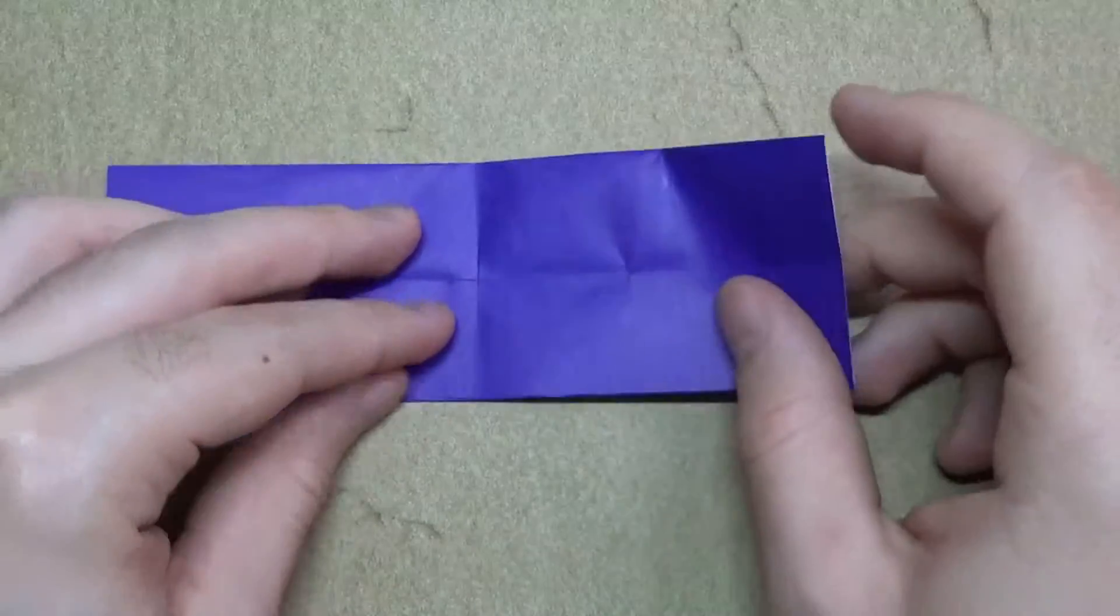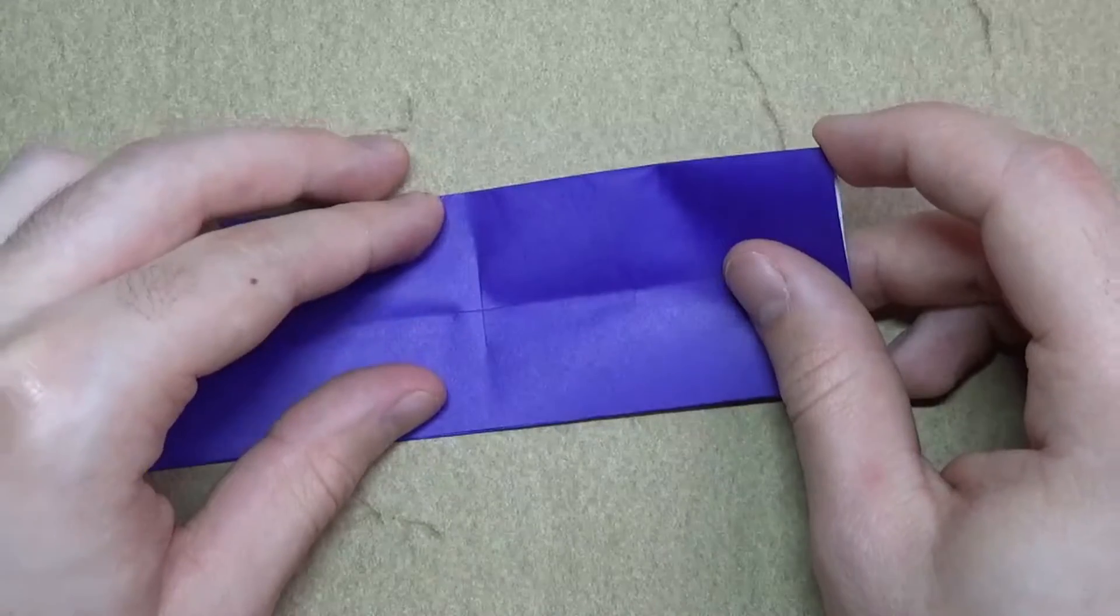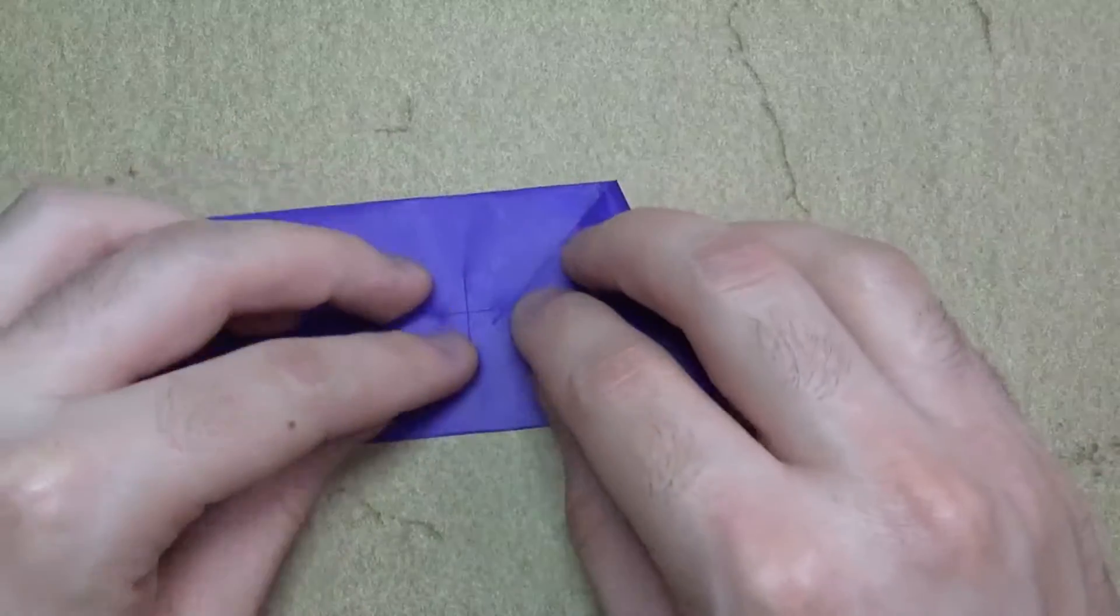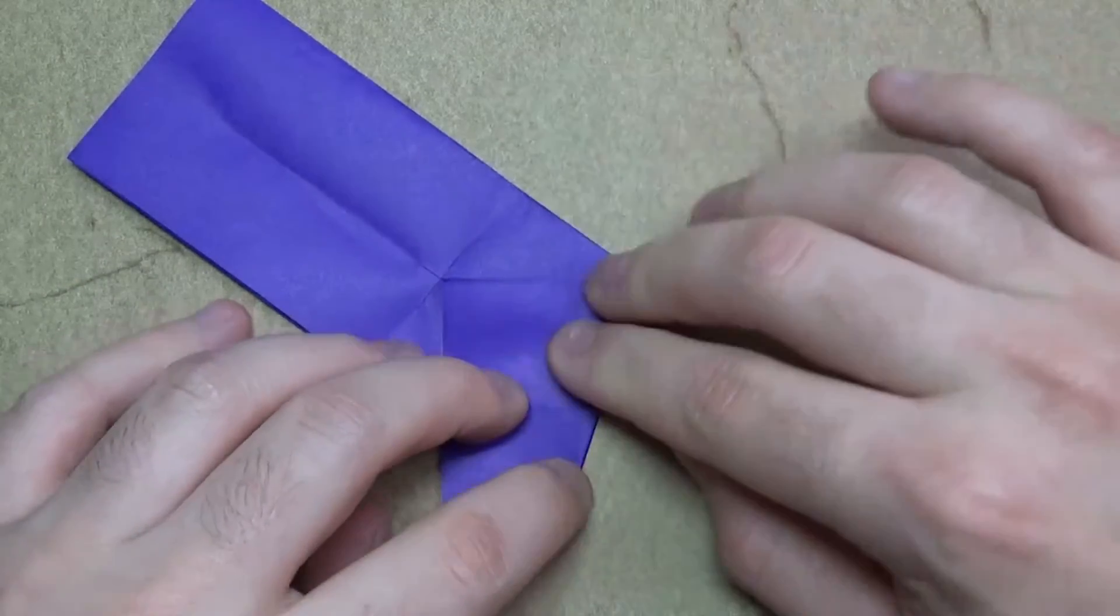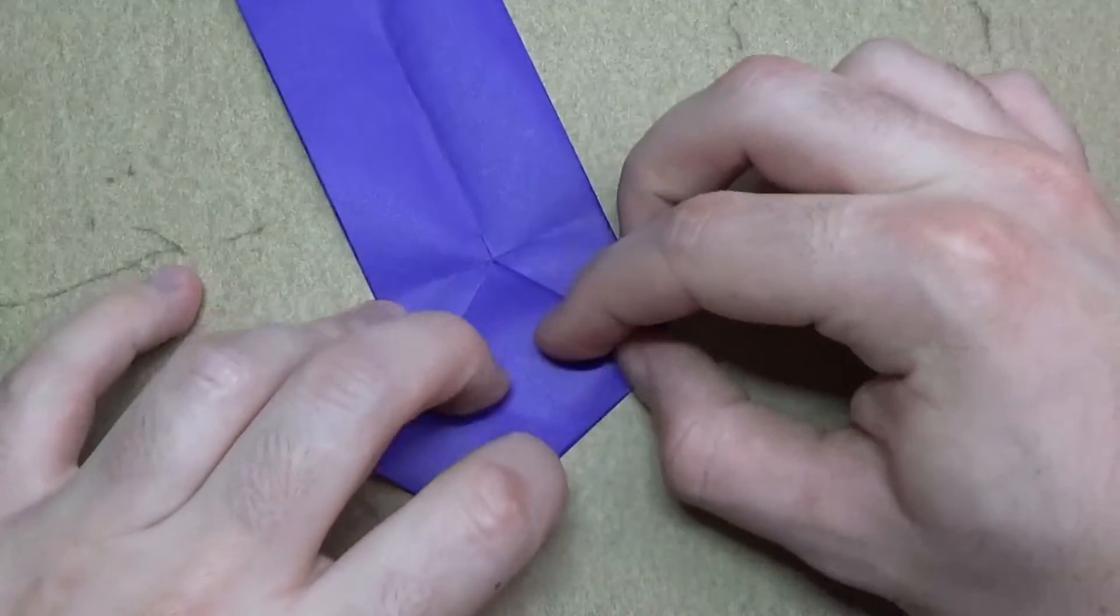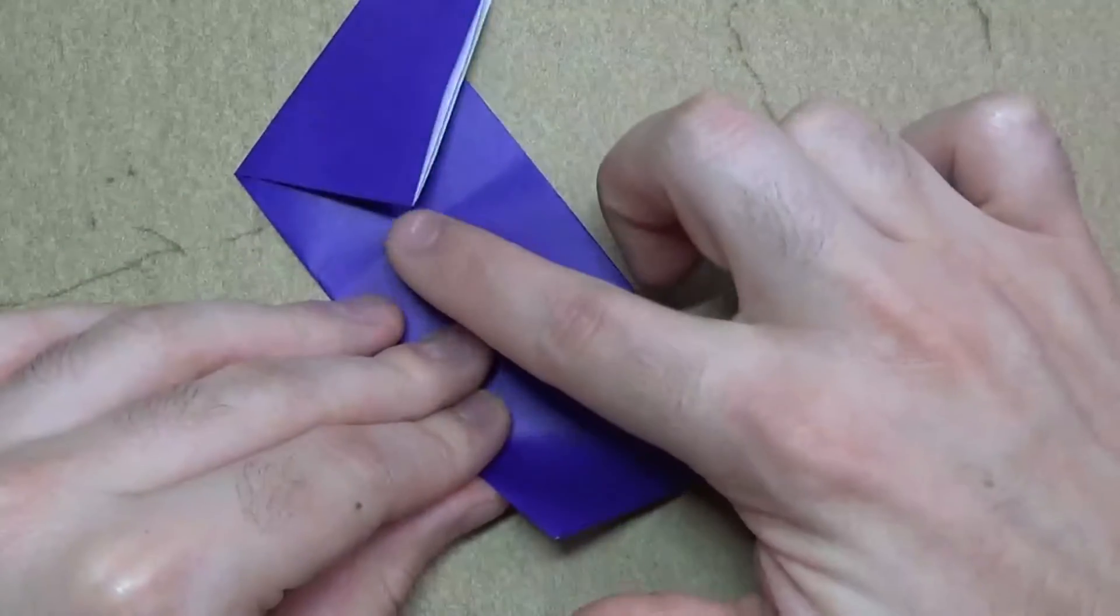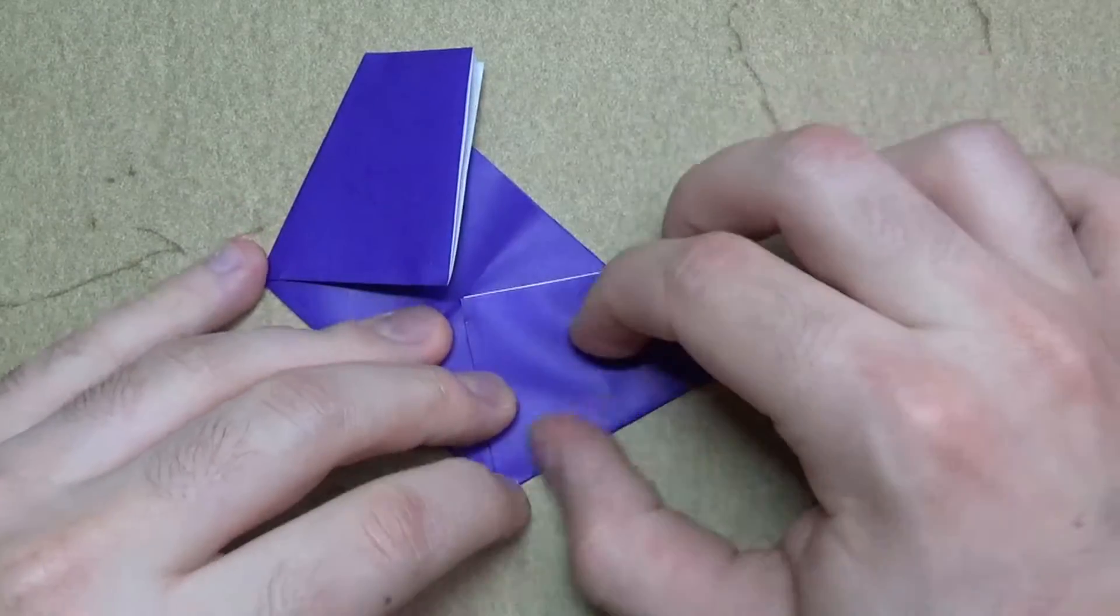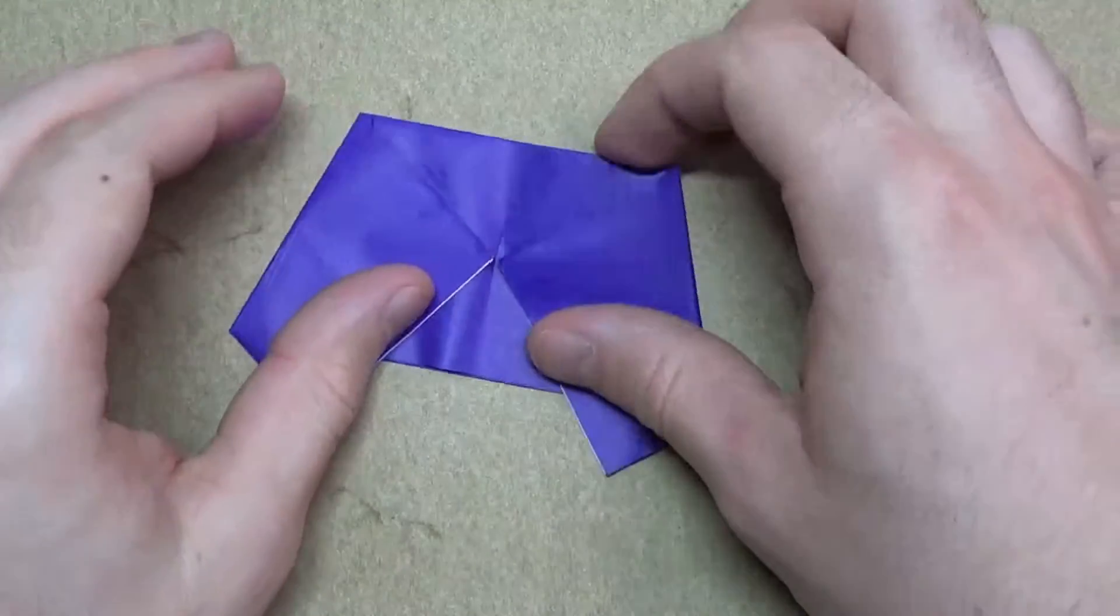Okay. Now what we're going to do is orient it so that the open side is facing you, and take this point and fold it to the intersection of the crease marks. Make sure you hold the layers now so you don't slide. Like this. And repeat on this side. So fold this point to here.